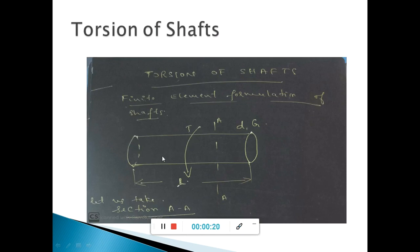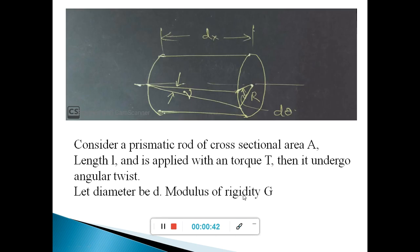Consider a prismatic bar or rod of cross-sectional area A and length L which is applied with a torque T. When it is applied with the torque T, it will undergo a deformation — that is nothing but the shear strain. Now let us consider a section at AA. At AA, due to the application of torque, there is angular deformation, that is nothing but the shear strain.